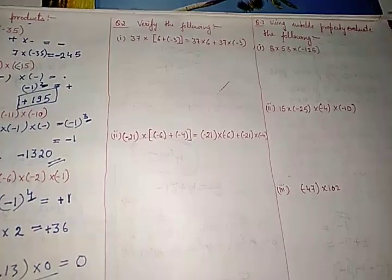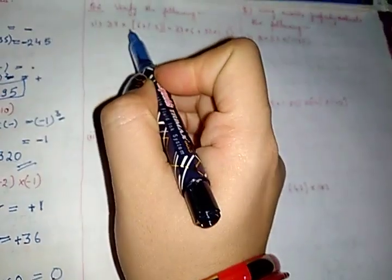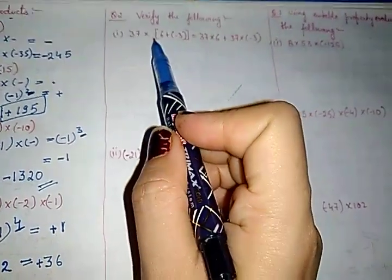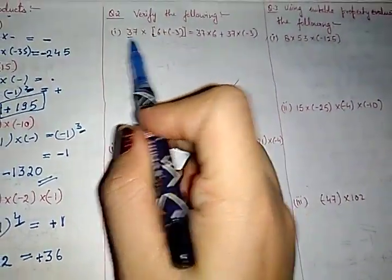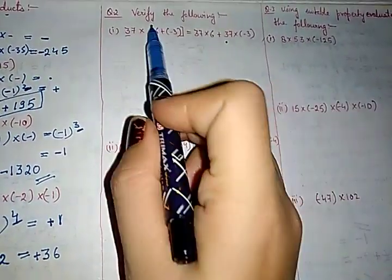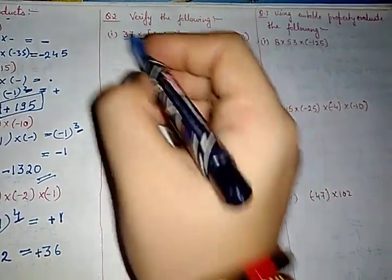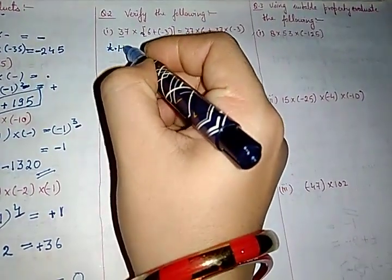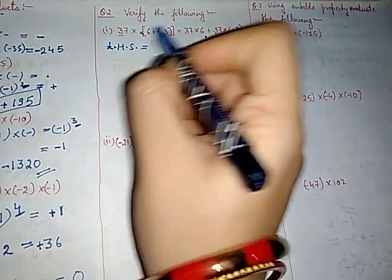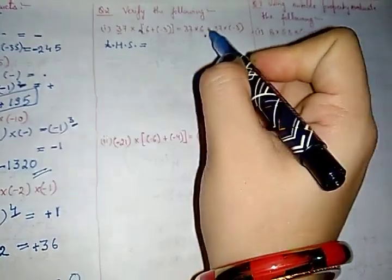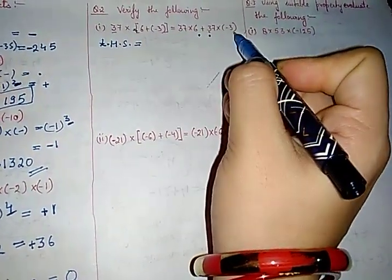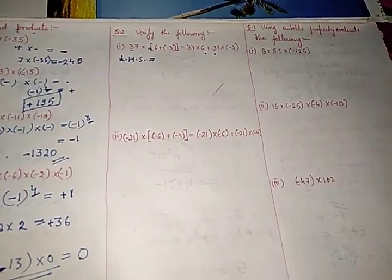The next question says: verify the following. You are given two sides of an equation and you have to prove that both sides are equal. What we will do is first find the LHS — left hand side — and then find the right hand side. If both are equal, that means our equation is correct.